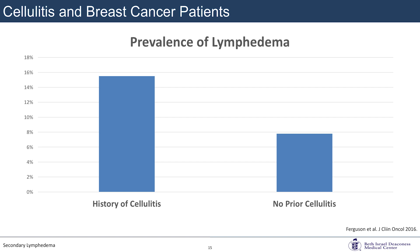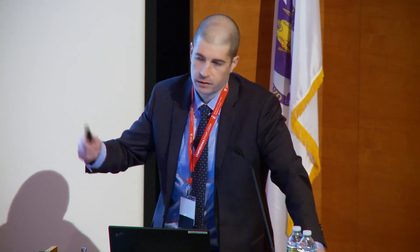A study from MGH looked at a surveillance cohort of about 700 patients with breast cancer treatment and retrospectively examined whether those who developed lymphedema had prior cellulitis. Those with a history of cellulitis had about a 15% risk of developing lymphedema, versus about 7% without prior cellulitis. This plays an important cyclic role: cellulitis worsens lymphatic function, which puts you at higher risk for subsequent cellulitis — a difficult cycle to break.